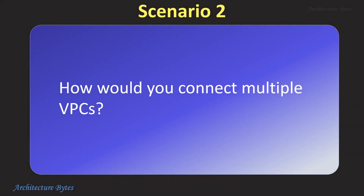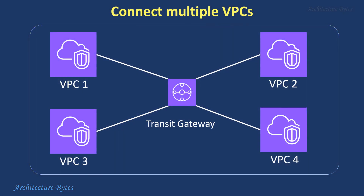How would you connect multiple VPCs? This can be done using a transit gateway, which acts like a central hub that simplifies connecting multiple VPCs and on-premise networks. It centralizes connections, reducing complex configurations compared to VPC peering's point-to-point approach.